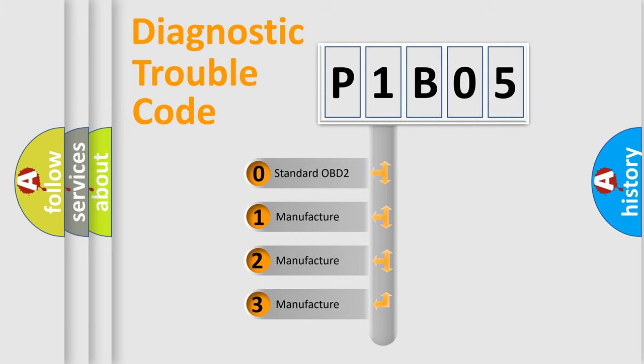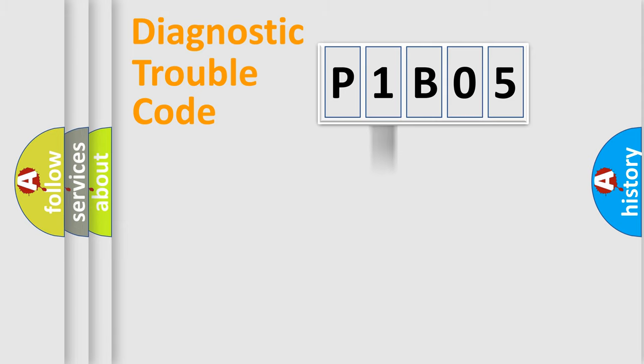If the second character is expressed as zero, it is a standardized error. In the case of numbers 1, 2, or 3, it is a more specific expression of a car-specific error.